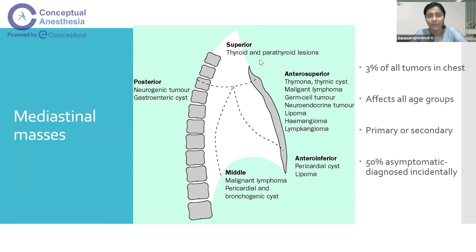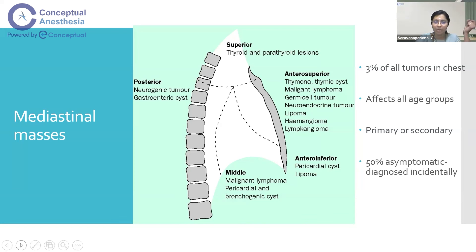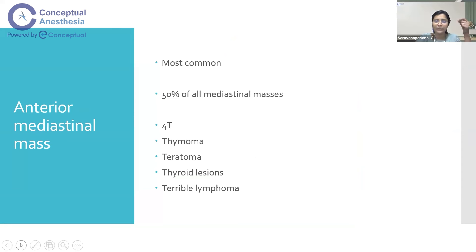In the superior mediastinum, you can find a retrosternal goiter, thyroid carcinoma with retrosternal invasion, or a parathyroid lesion. In the anterior and superior mediastinum, you can find thymoma, thymic cysts, malignant lymphoma, neuroendocrine tumors, lipoma, and hemangioma. In the anterior inferior compartment: pericardial cysts and lipoma. In the middle mediastinum: malignant lymphomas, pericardial and bronchogenic cysts. In the posterior mediastinum, the commonest is a neurogenic tumor, followed by gastroenteric cysts. Treatment varies — it may be preoperative chemo or radiotherapy, or surgical excision followed by chemo or radio, depending on pathology.